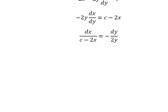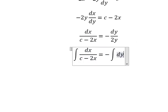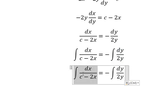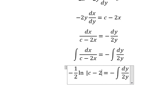Next, we put the integration for both sides. This one we have negative 1 over 2 ln of the absolute value of c minus 2x.